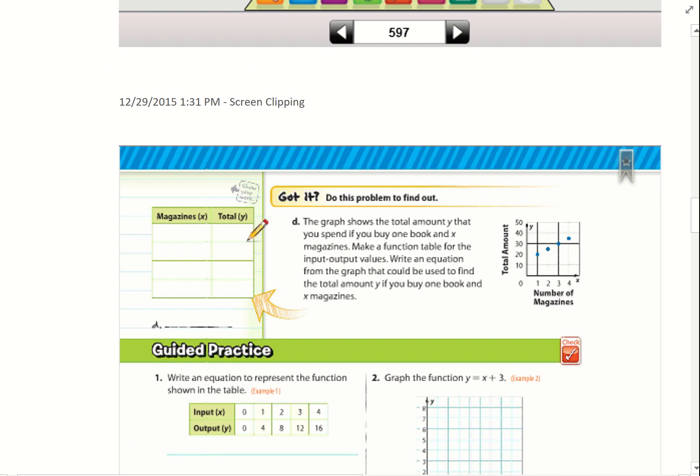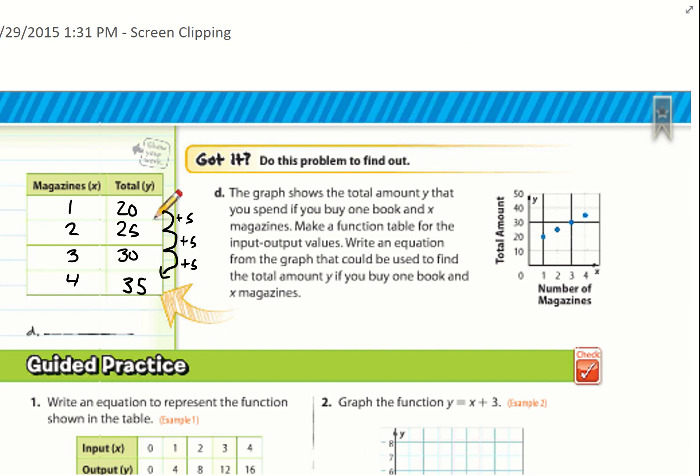Go ahead and try D. And pause this video. The first thing I did was I took the information from my graph, and I put that information into a table. So when x equals 1, y equals 20. When x equals 2, y is 25. When x equals 3, y is 30. When x is 4, y equals 35.